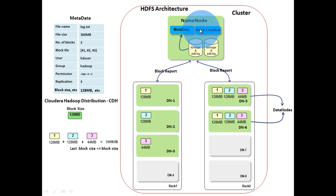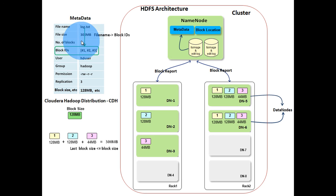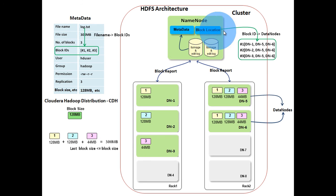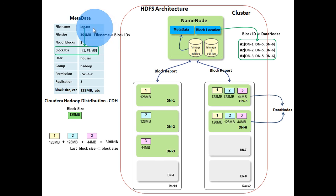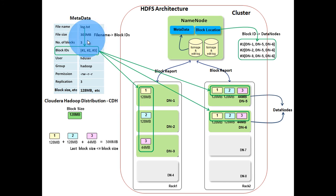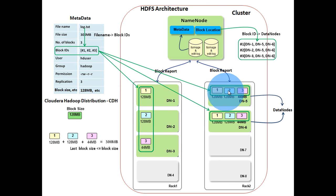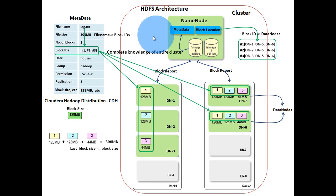Now let's put all things together. In metadata, file name is mapped to block IDs. In block location, block IDs are mapped to data node addresses. As a result, for a given file, the name node knows on which data nodes the blocks are located. That is, name node knows that the blocks of log.txt are stored in data nodes 1, 2, 3, 5, and 6. Using metadata and block location, name node has complete knowledge of the entire cluster.